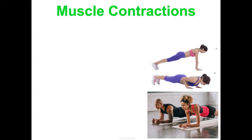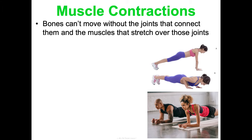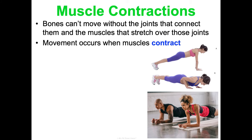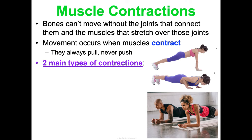Here is the briefest big-picture overview of muscle contraction — we'll spend much more time on this in Concept Three. Bones can't move without the joints connecting them, and also can't move without the muscles stretching over those joints. Movement occurs when muscles contract. Importantly, muscles always pull — they never push.